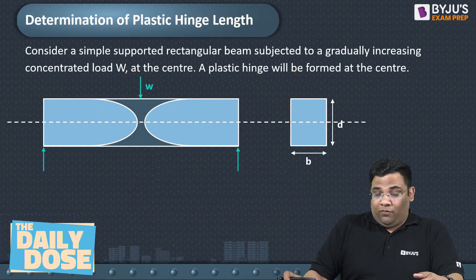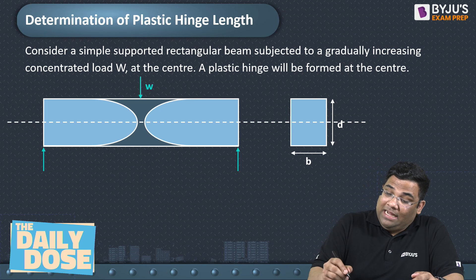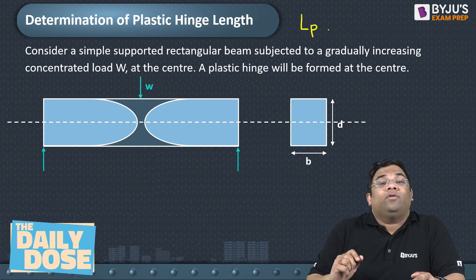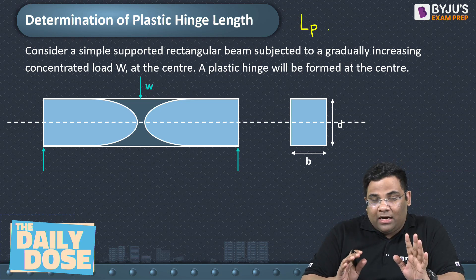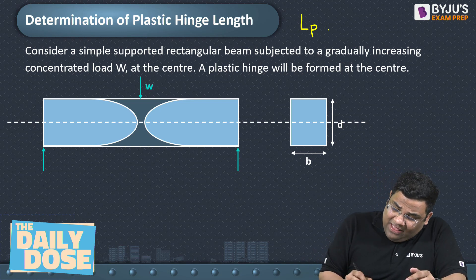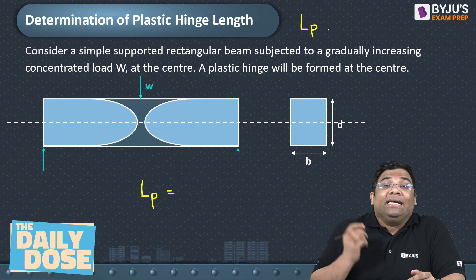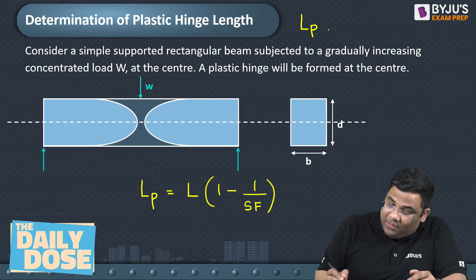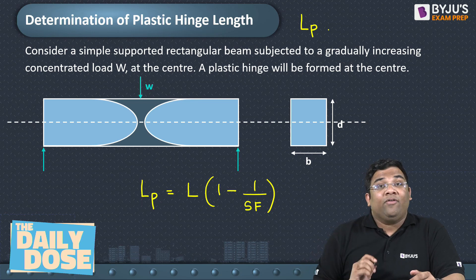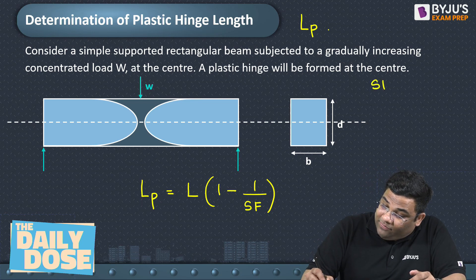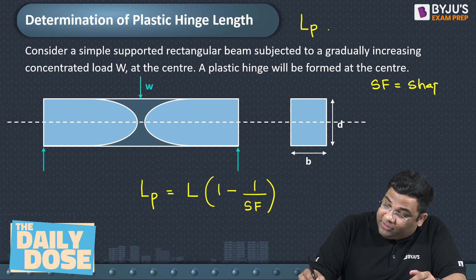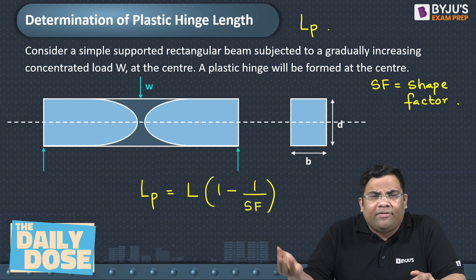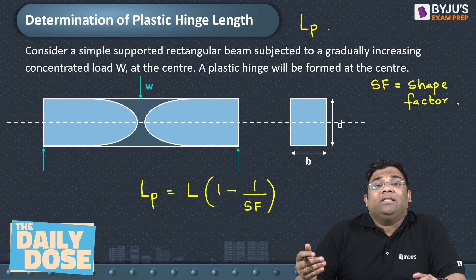To find the length of the plastic hinge for a simply supported beam with a point load at the center, the formula is: length of plastic hinge = total length × (1 − 1/shape factor). The shape factor depends on the cross-section. Here I have drawn a rectangular cross-section, but the cross-section can be circular, triangular, or an I-section — so it varies with the cross-section.